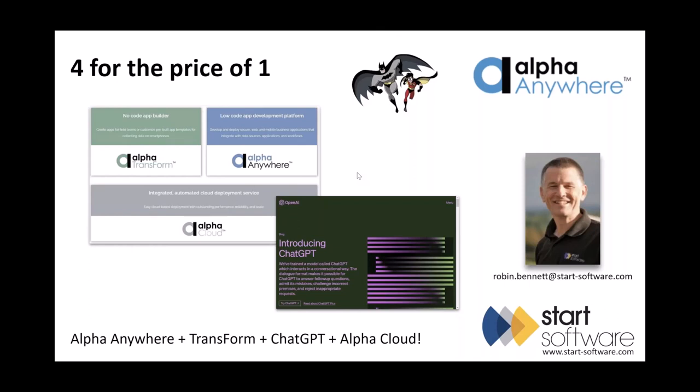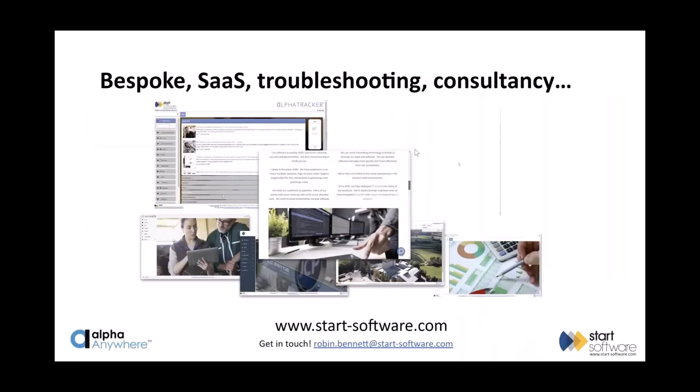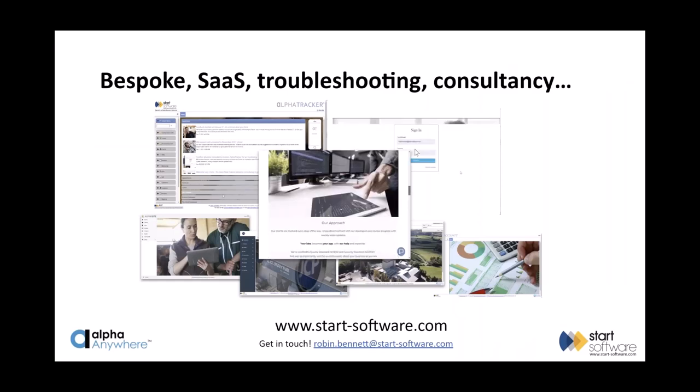This is four for the price of one today — you always get a bargain with Start Software. We're looking at Alpha Anywhere, we're looking at Transform, we're looking at ChatGPT for the AI side of things, and we're even touching on Alpha Cloud as well. There's a reason I've got Batman and Robin on the front page, but we'll come to that in a moment.